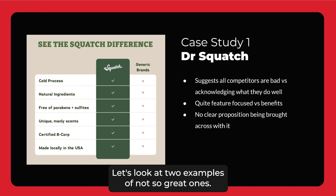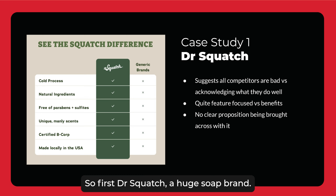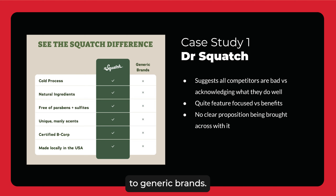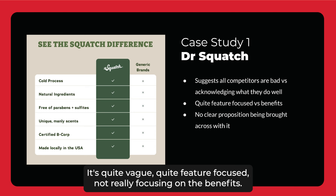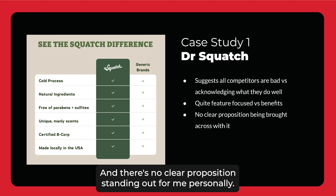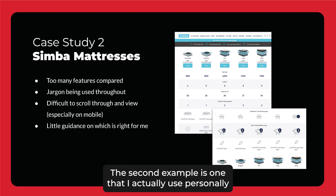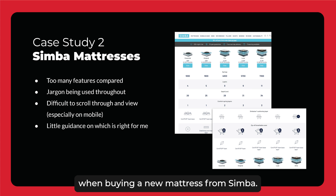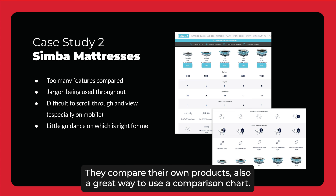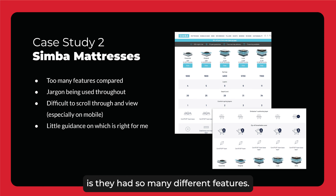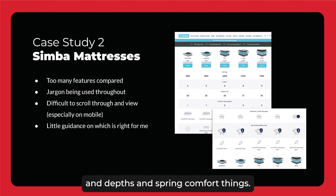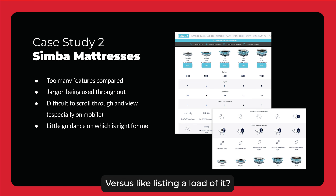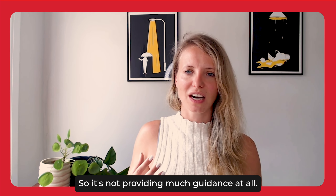Let's look at two examples of not-so-great ones. First, Dr. Squatch — a huge soap brand. They basically have a comparison chart where they're comparing their product to generic brands, so it's not super clear which brand it's comparing to. Everything the rest are doing is marked as bad. It's quite vague, quite feature-focused, not really focusing on the benefits, and there's no clear proposition standing out. The second example is one I actually used personally when buying a new mattress from Simba. They compared their own products — also a great way to use a comparison chart. However, what they did sadly is they had so many different features and used a lot of jargon throughout. I had no idea what all these different layers, depths, and spring comfort things meant. Which one is going to suit my back and my sleeping style? And on mobile, it was very, very hard to use. So it's not providing much guidance at all.